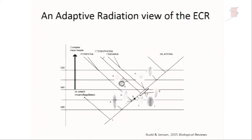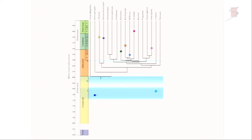And I think that's telling us something very critical about the linkages between developmental evolution and what we see in the fossil record. I think we can reject this adaptive radiation view, and it supports what I think is a much more interesting view of the complexity of life.